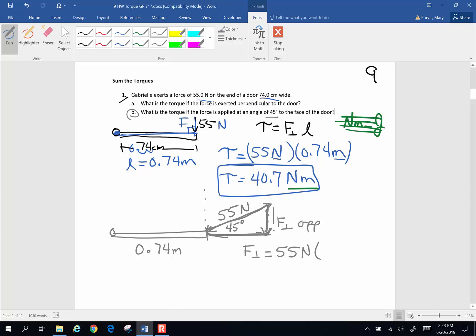times the sine of 45 degrees. And so my torque is my force perpendicular to my lever arm, which will be 55 Newtons times the sine of 45 times 0.74 meters.